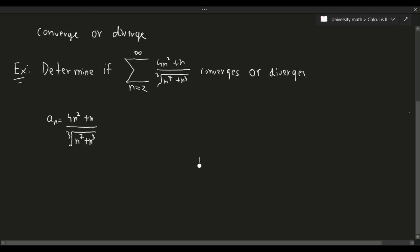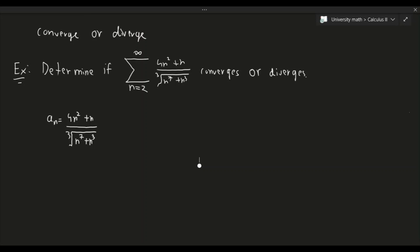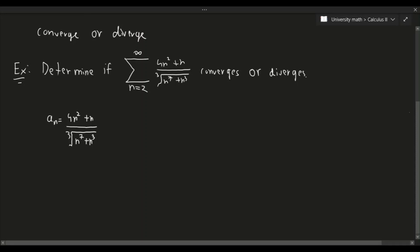Now how do we determine the second series? The strategy is to look at what happens at extremely large values of n. For very large values of n, the 4n² term dominates the numerator, and in the denominator the n⁷ term dominates inside the cube root, giving us the cube root of n⁷.